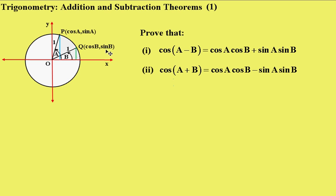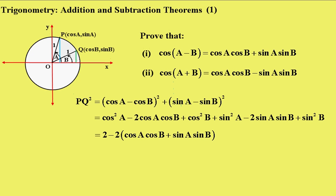So what we're going to do now is work out the distance PQ using the distance formula. PQ² is (cos A - cos B)², that's the x values squared, plus (sin A - sin B)² all squared. Now removing the brackets we get cos²A - 2cos A cos B + cos²B. On the other side we get sin²A - 2sin A sin B + sin²B.